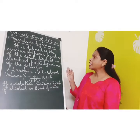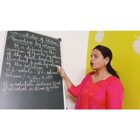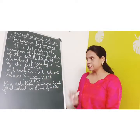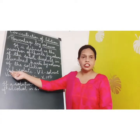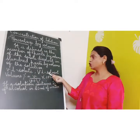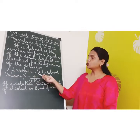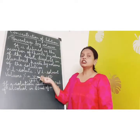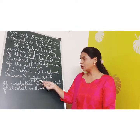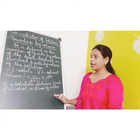Now we come to percentage by volume. It is defined as the number of parts by volume of the solute dissolved in hundred parts by volume of the solution. In simple words, if small v is the volume of the solute and capital V is the volume of the solvent, then the volume percentage equals volume of the solute upon volume of the solution — that is solute plus solvent — into hundred.